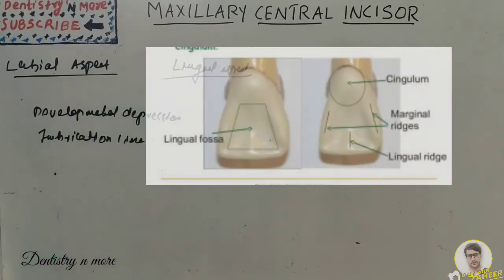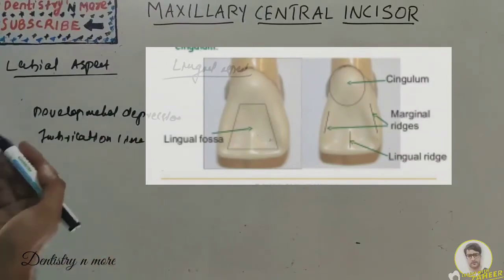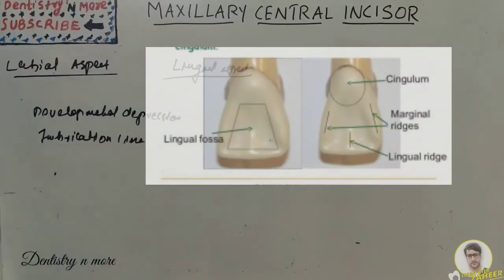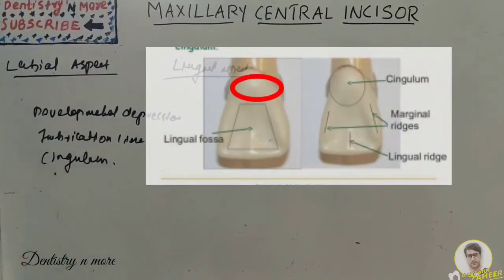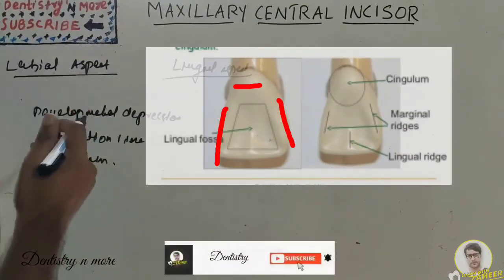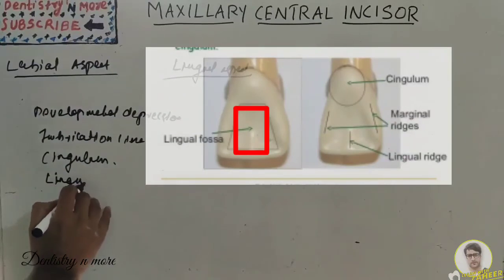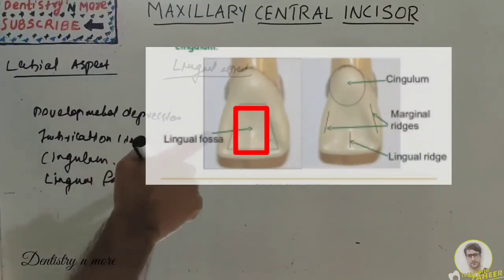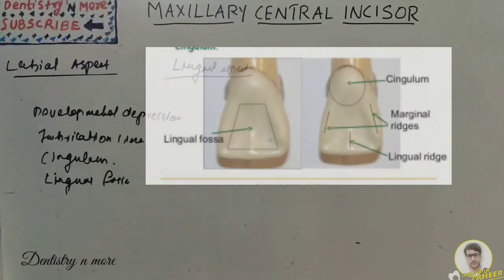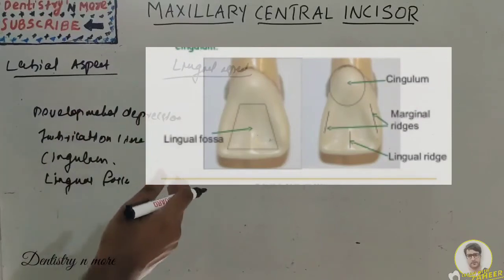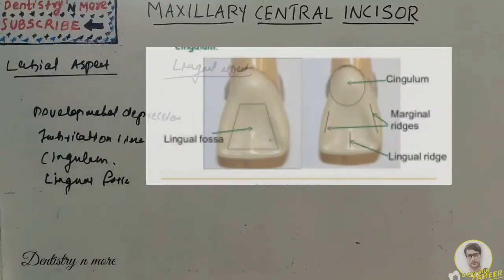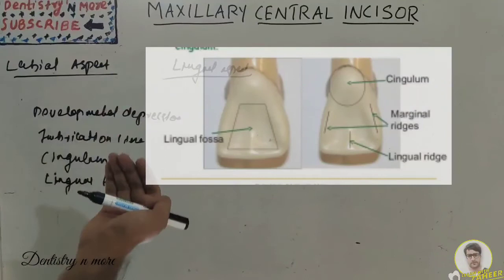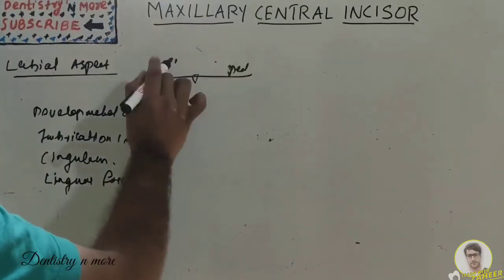The lingual aspect has more features. The lingual outline is a reverse of the labial aspect, with both convexities and a concavity. Immediately below the cervical line there is a smooth convexity known as the cingulum, which is commonly asked as a short note. Between the marginal ridges and below the cingulum is a shallow concavity called the lingual fossa. The lingual fossa is bordered mesially by the mesial marginal ridge, incisally by the lingual portion of the incisal ridge, distally by the distal marginal ridge, and cervically by the cingulum. Developmental grooves extend from the cingulum into the lingual fossa.